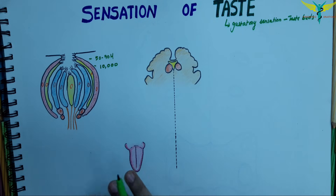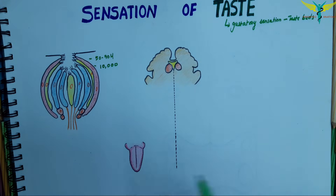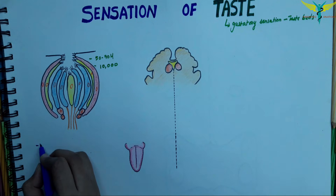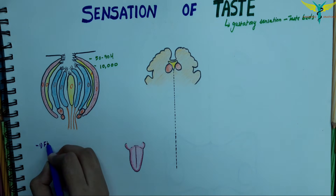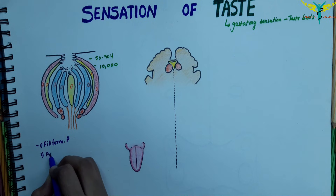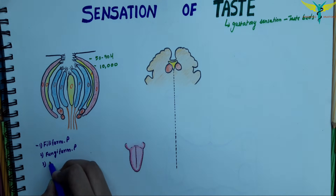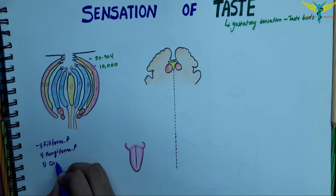There are three types of papillae located on the tongue: the first is filiform, the second is fungiform, and the third is circumvallate.